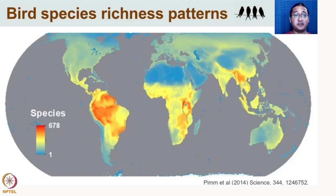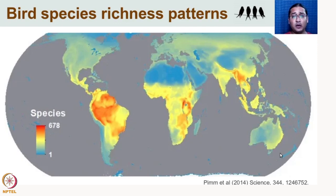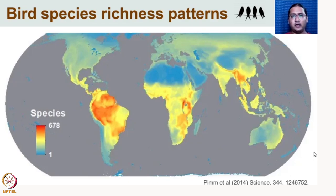If you look at bird species richness patterns across the world, this map shows the number of species that breed at a particular location. There is very low breeding bird species richness near the poles, whereas in the tropics — the Amazon basin, the Andes, Central Africa, the Eastern Arc Mountains, Southeast Asia and the Himalayas — you find very high numbers of species. Macroecology asks why we see these patterns, and why there are so many more species in the tropics than at higher latitudes.